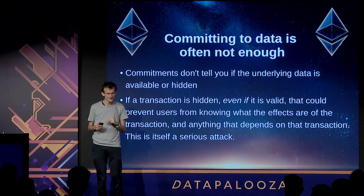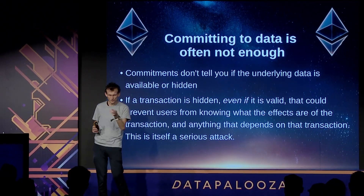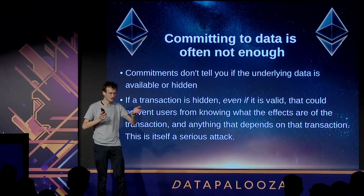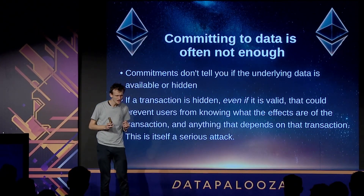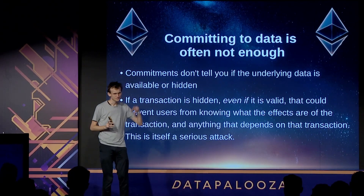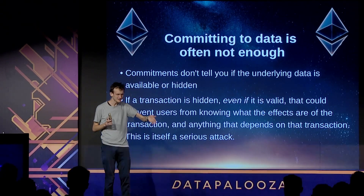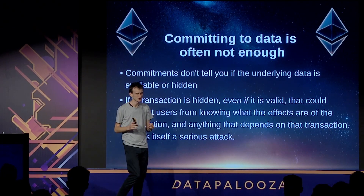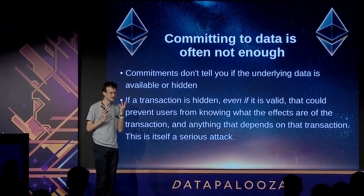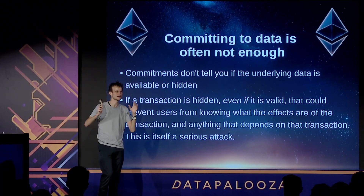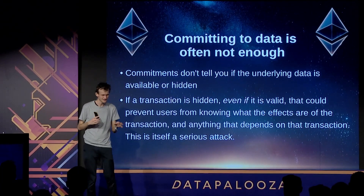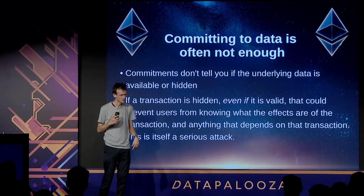If I publish an invalid Ethereum block and you challenge it, I need to respond and show it's correct — or maybe I can't. If the block is actually invalid, there is evidence that I published and signed an invalid block. The system can then penalize me: it can take my money, say you made a bad block and you lose a million dollars, burn half of it for security, and give the other half to the person who challenged the invalid block.